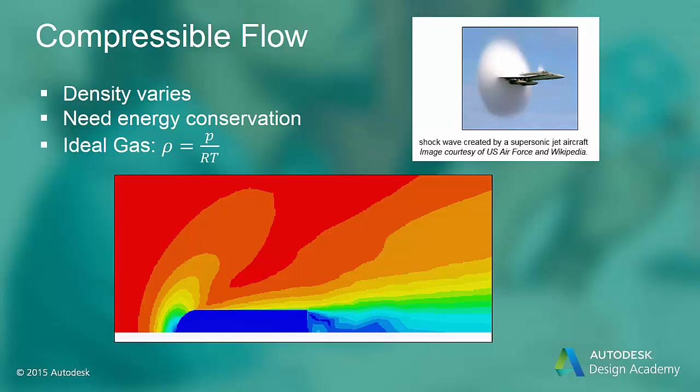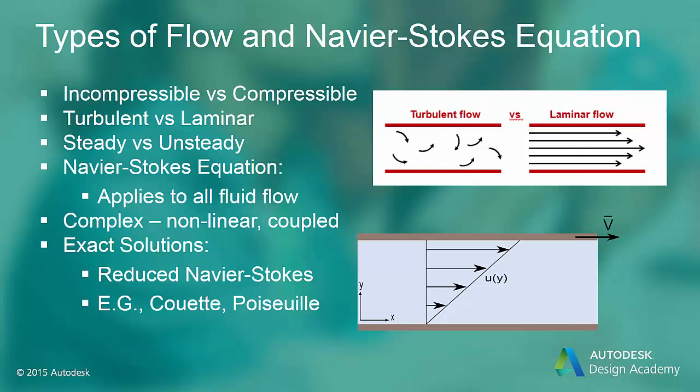Jets that are designed to operate in the supersonic range have a different shape than aircraft operating in the subsonic range, that is, in the range where Mach numbers do not exceed 0.3. Before a fluid flow analysis can be done, we must determine the flow regime, or the type of fluid flow that we are analyzing. Is the flow compressible or incompressible? What is the Mach number of the flow? Is the flow turbulent or laminar, as determined by the Reynolds number?